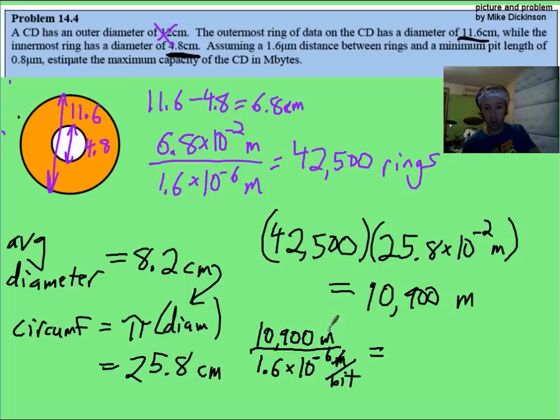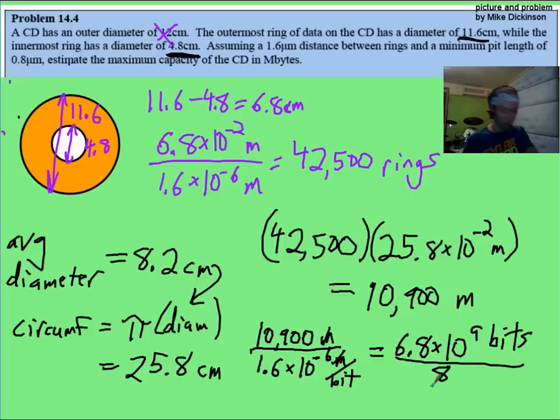If we work that out, we are going to end up with a lot of bits. We're going to get something like 6.8-ish times 10 to the ninth bits. Then, you want to know how many bytes you have. There's 8 bits in a byte. So you divide it by 8.